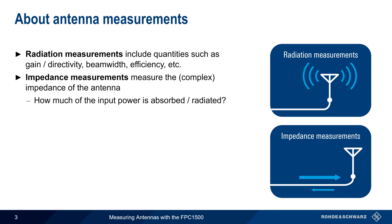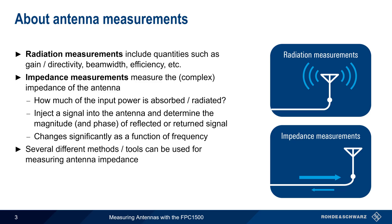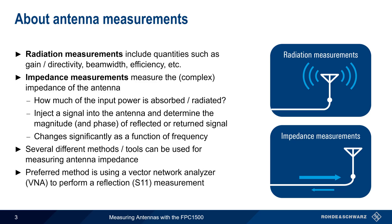The impedance of an antenna determines how much of the input or transmit power is absorbed or radiated by the antenna, and how much is returned to the transmitter. This is done by injecting a signal into an antenna and then measuring the magnitude and phase of the signal reflected or returned from the antenna. This will change, often substantially, as a function of frequency. The preferred method is using a vector network analyzer to perform a reflection or S11 measurement, and this is the method used by the FPC-1500.